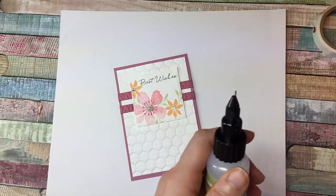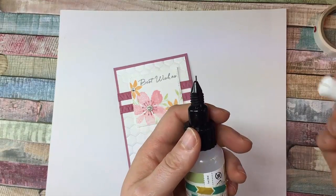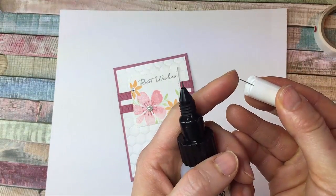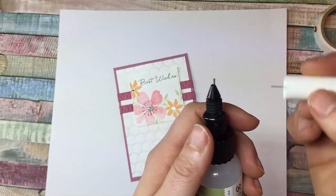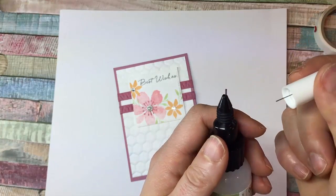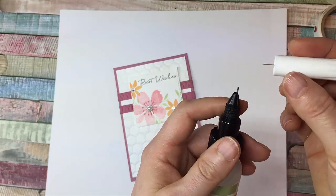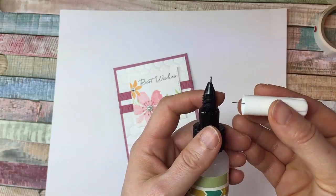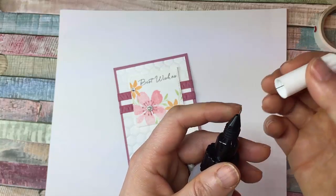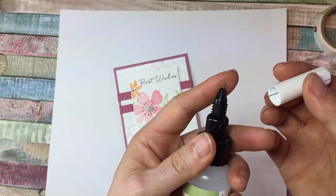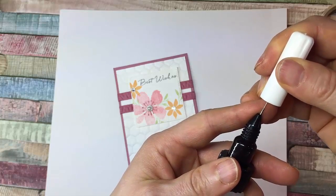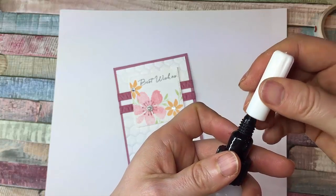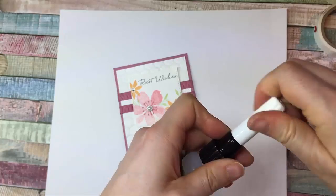One last thing about the fine tip glue pen: the lid has a needle, or it's not actually a needle but a little wire that goes down into the tip to keep it free and clear and unclogged. Some people struggle to get that tiny thing into that tiny thing, so one thing that helps is to lean it up against your finger, both pieces up against your finger. That just keeps them from wiggling around, and then slide it on in.